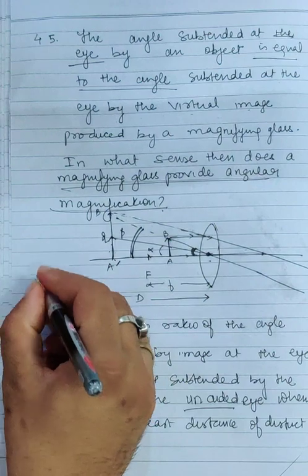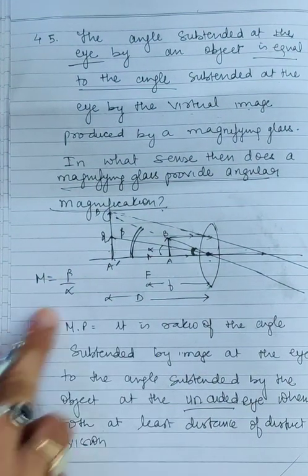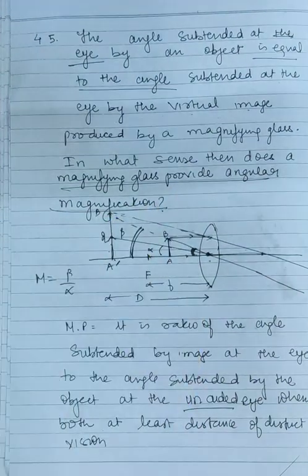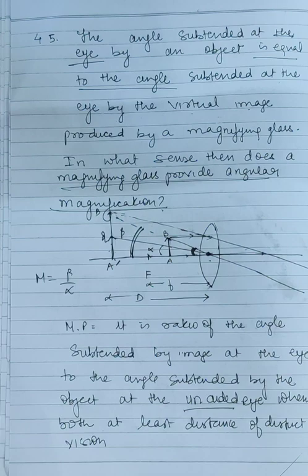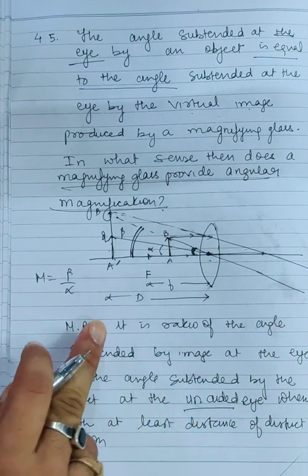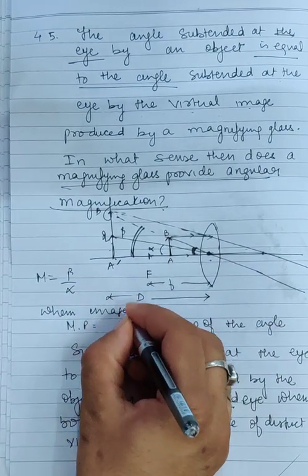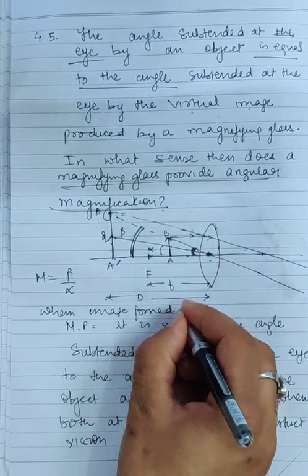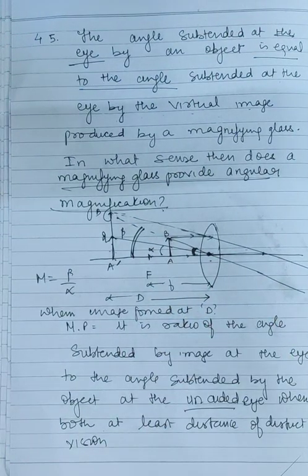Magnifying power M is beta upon alpha. This is the magnification. Magnifying power is the ratio of the angle obtained by the image to the angle obtained by the object when both are placed at D. This definition applies when the image is formed at D.